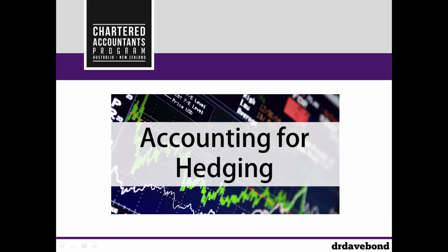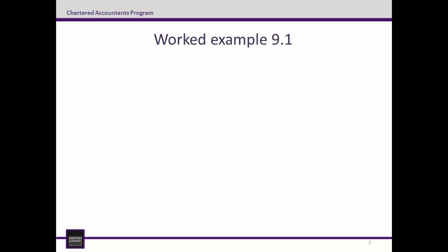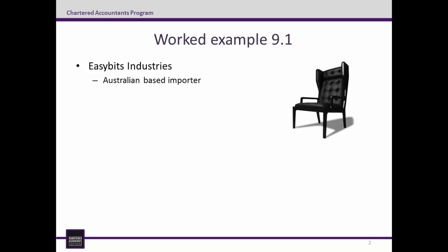Hi, my name's Dave and in this video we'll walk through worked example 9.1 on the accounting for cash flow and fair value hedges. I'll assume you have it with you. Before we begin, a quick overview of the scenario. The company EasyBits Industries is an Australian based importer. Its board has a low risk tolerance and have a risk management strategy to hedge all foreign currency purchases over $1 million.